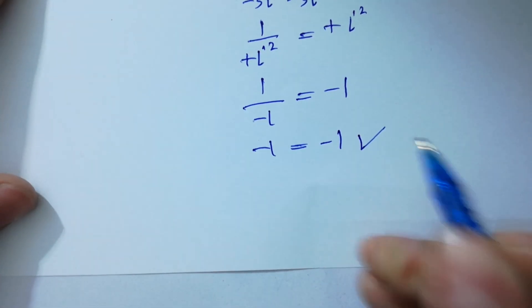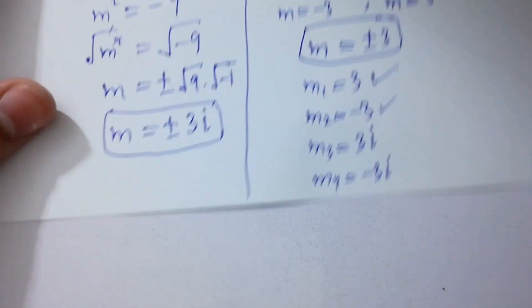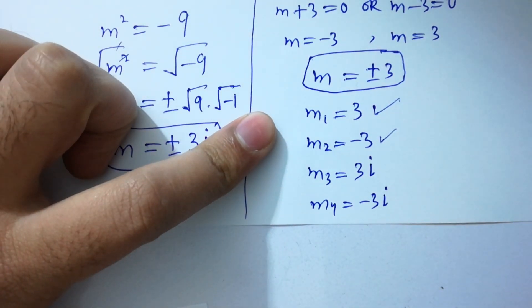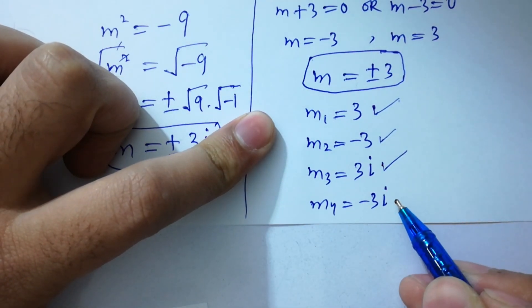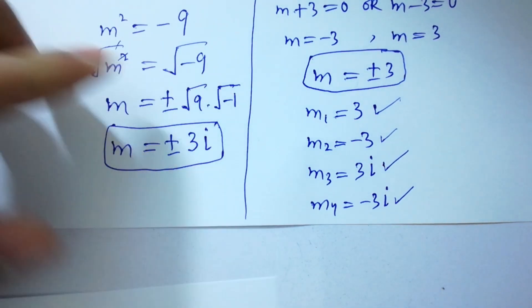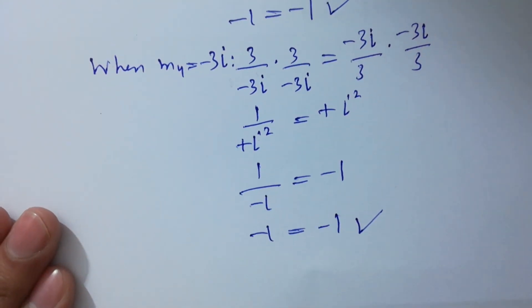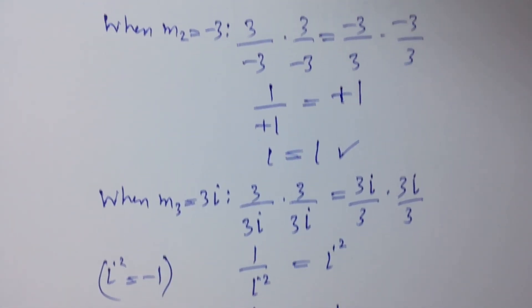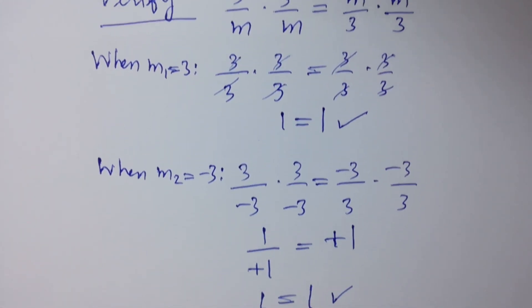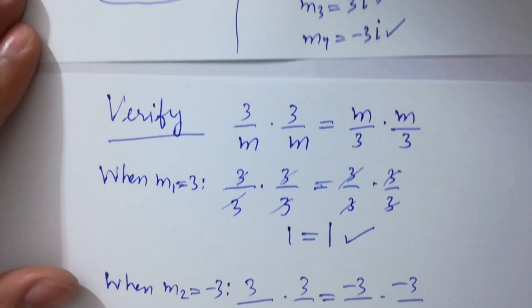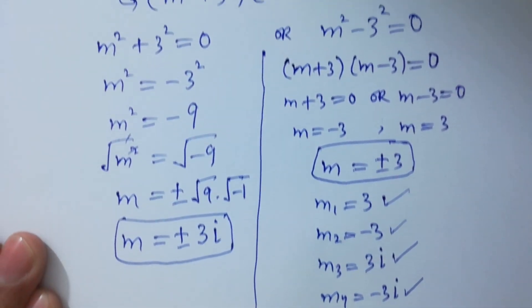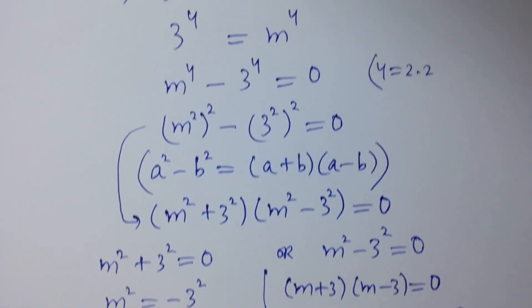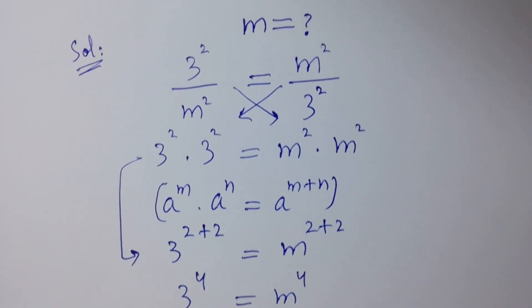This confirms that m1 equals 3, m2 equals minus 3, m3 equals 3i, and m4 equals minus 3i are all correct solutions. Thanks for watching this video. Please subscribe to this channel to get notifications of new videos, and don't forget to share with your classmates and friends. You can also visit the playlist to learn more.